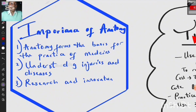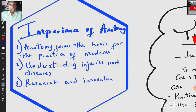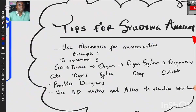The next section is the importance of anatomy — why is anatomy important and why do we need to study it? Number one, anatomy forms the basis for the practice of medicine. It also helps in the understanding of injuries and diseases, and it is important for research and innovation.